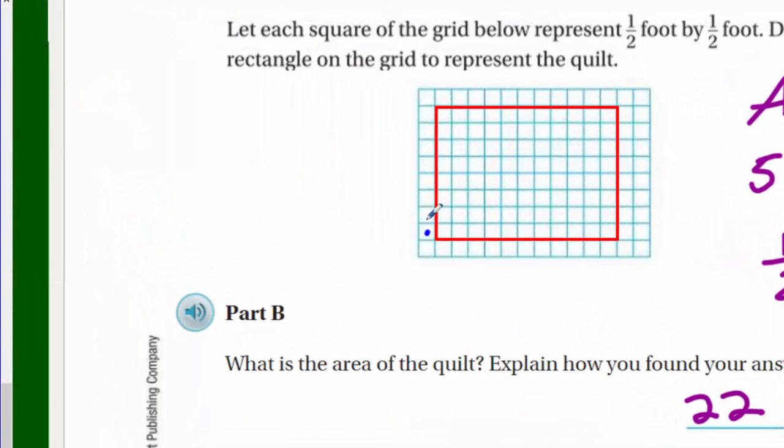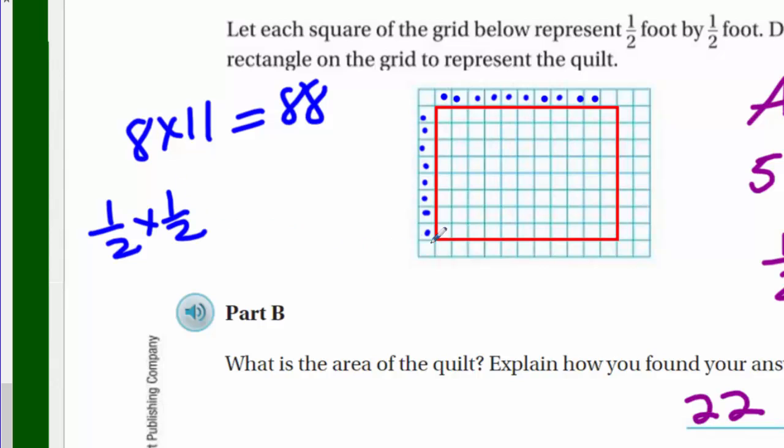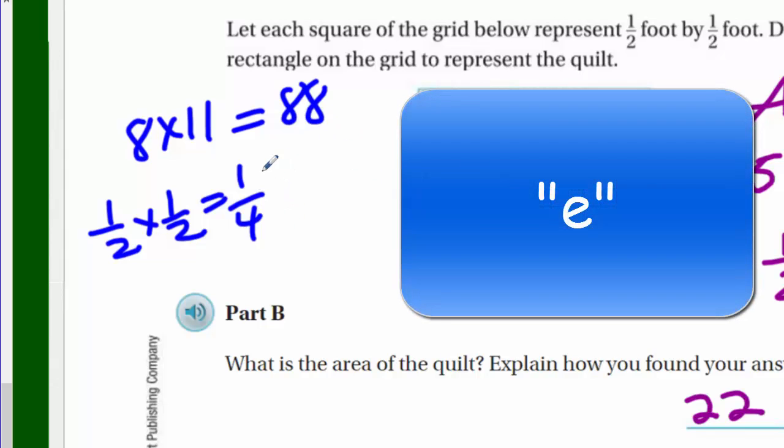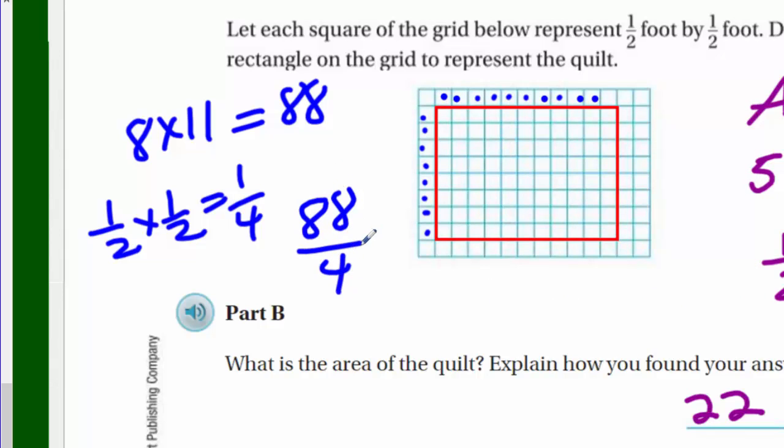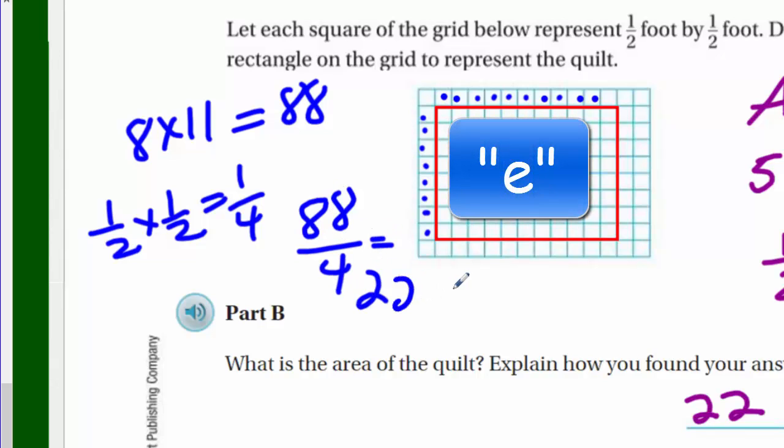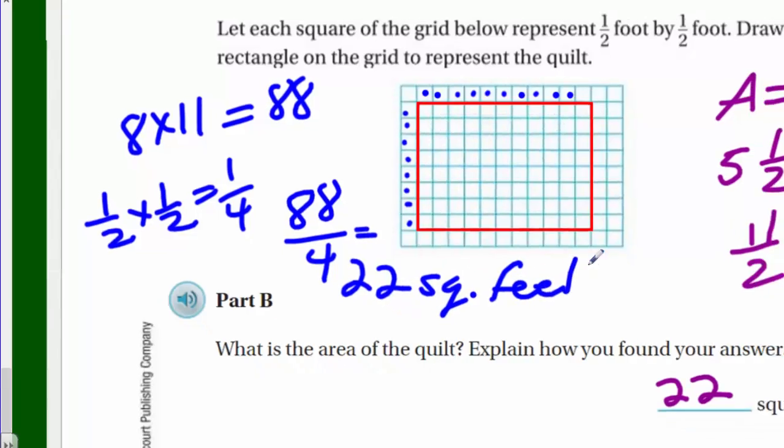If we were going to use our model, that wouldn't be the only way that you could solve that. You could solve it another way. You could think of it as there's 8 rows here and 11 columns. You could take 8 times 11. 8 times 11 is going to equal 88. That's 88 squares. But remember, each square represents an area of a half foot by a half foot. So a half foot by a half foot is what each square represented. That's going to equal one quarter square foot. So we could take that 88 times the quarter, and that's going to be 88 over 4. And of course, 88 divided by 4 is going to equal 22 square feet. So that's another way.